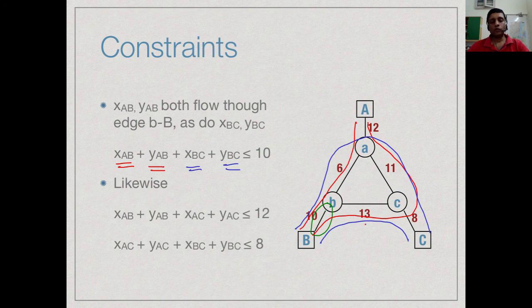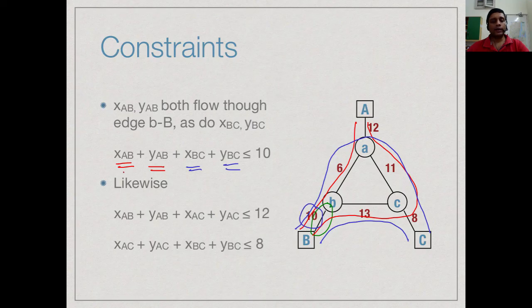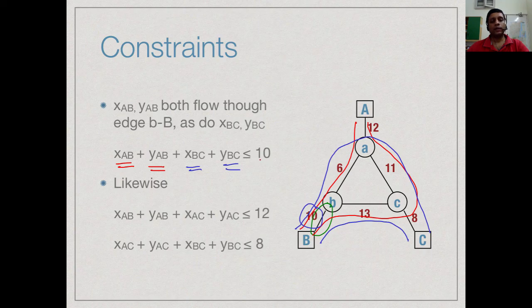All these 4 routes put together will add up to whatever capacity is flowing through this link. And this link has capacity 10. So, x_AB + y_AB + x_BC + y_BC has to be at most 10.